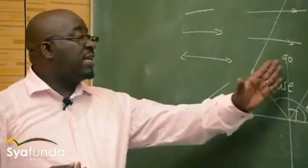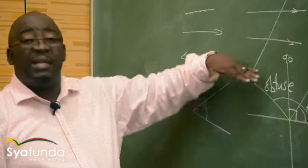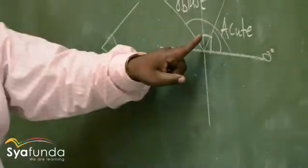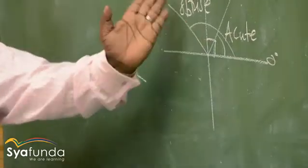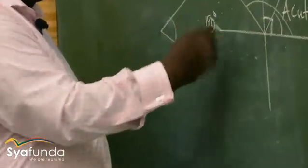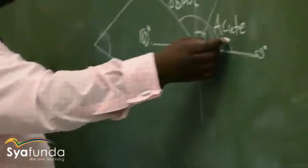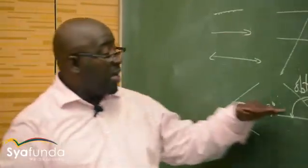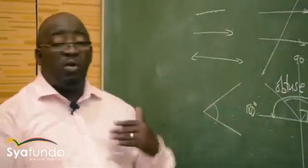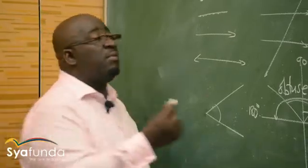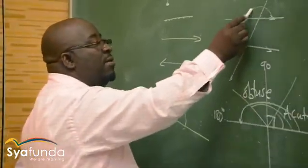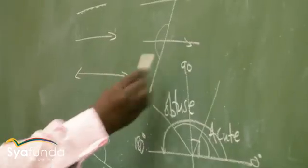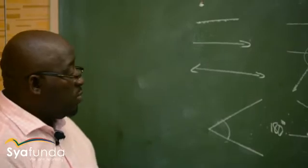An obtuse angle is greater than 90 degrees but less than 180 degrees. After obtuse, we come to an angle that is exactly 180 degrees — that is called a straight line. A straight line is always equal to 180 degrees, whether we measure from left to right or right to left.